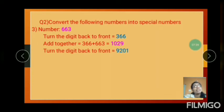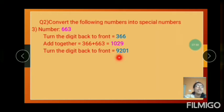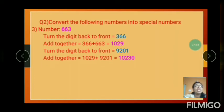Again — this number is 1029. Now write 1029 plus 9201. Add together: 1029 plus 9201 equals 10230.